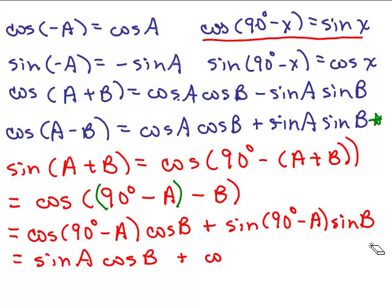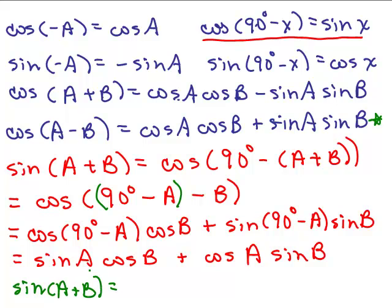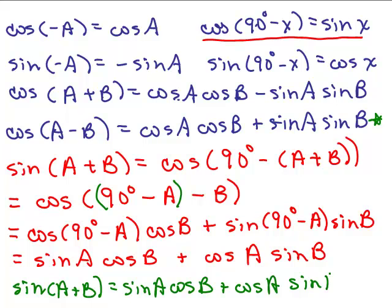And the sine of 90 degrees minus a is going to be the cosine of a. So we have cosine a times sine b. And there we have the formula for the sine of a plus b: sine a cosine b plus cosine a sine b.